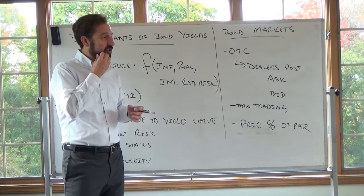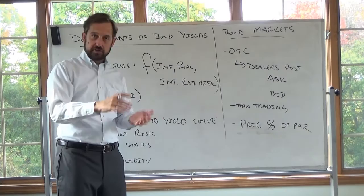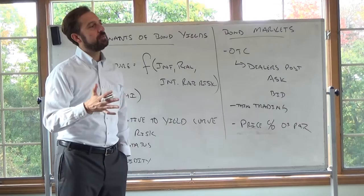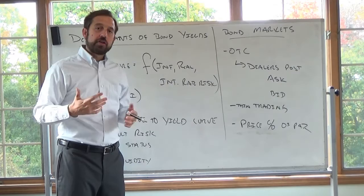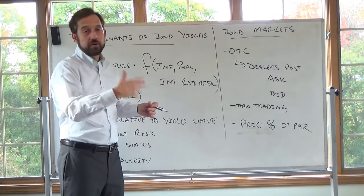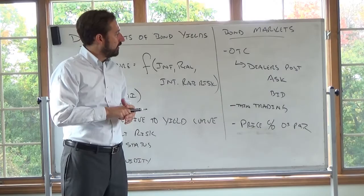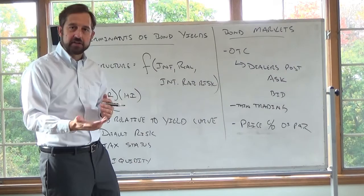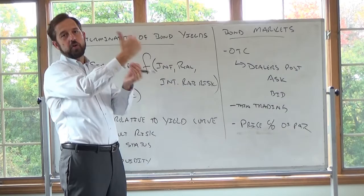The overall volume in dollars of bonds traded can be more than stocks, it's just that bond volume is spread thinly across a lot of different bonds — maybe 30 different Intel bonds — whereas trading in stock is all concentrated in common stock. Bond trading doesn't lend itself nicely to an organized exchange. Bond markets are OTC — over-the-counter. If you wanted to trade a bond, you would call the bank and say, what are you offering this bond at?